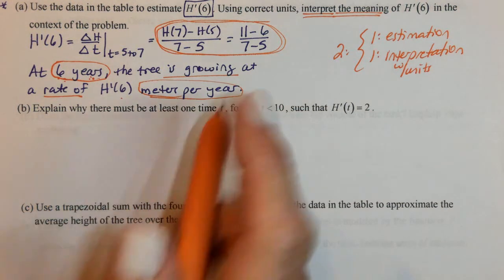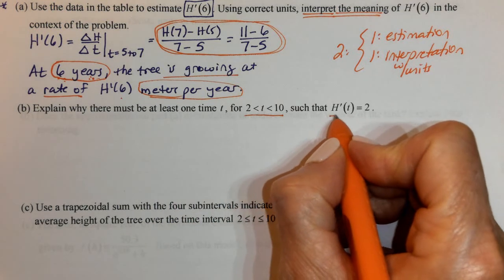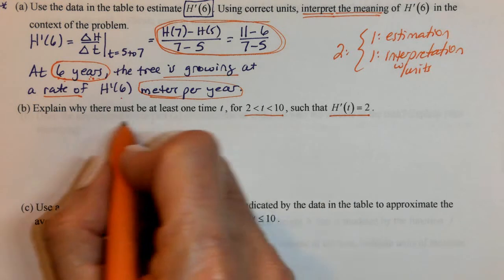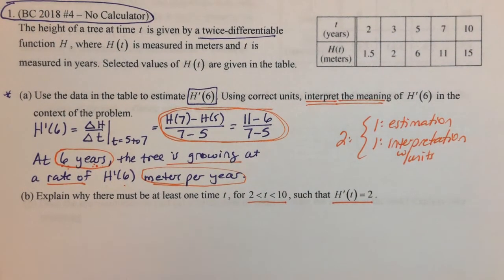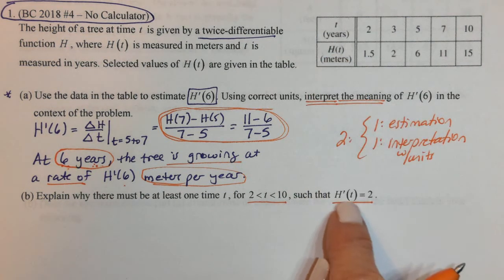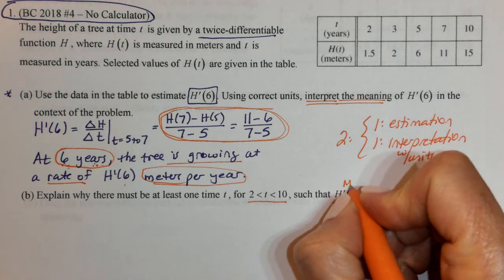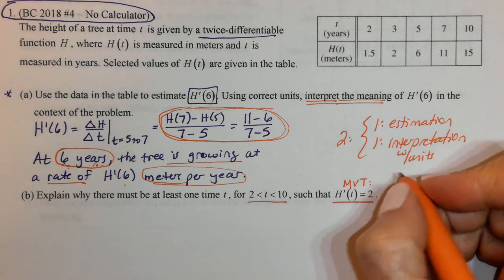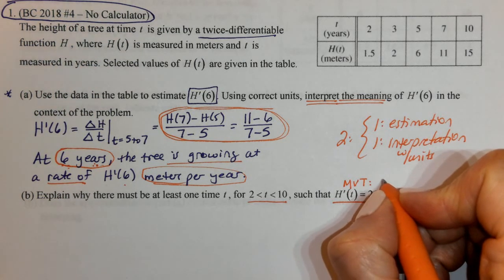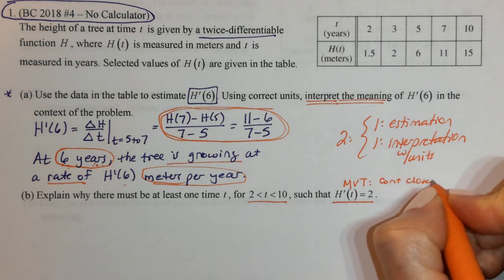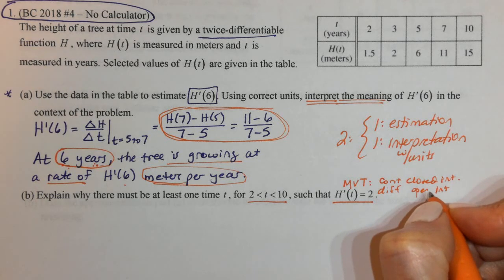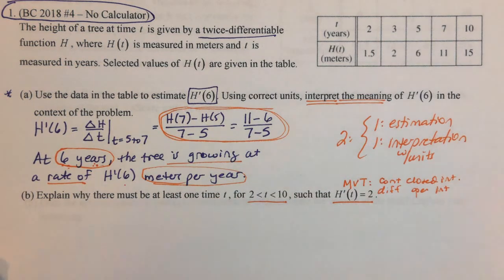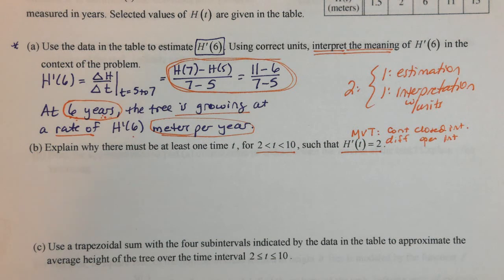Part B: Explain why there must be at least one time between 2 and 10 such that H prime equals 2. This is an existence question — either IVT or MVT. Since our data is in H and they're asking about H prime, I know I need the Mean Value Theorem. For MVT, we must state that the function is continuous on the closed interval and differentiable on the open interval.